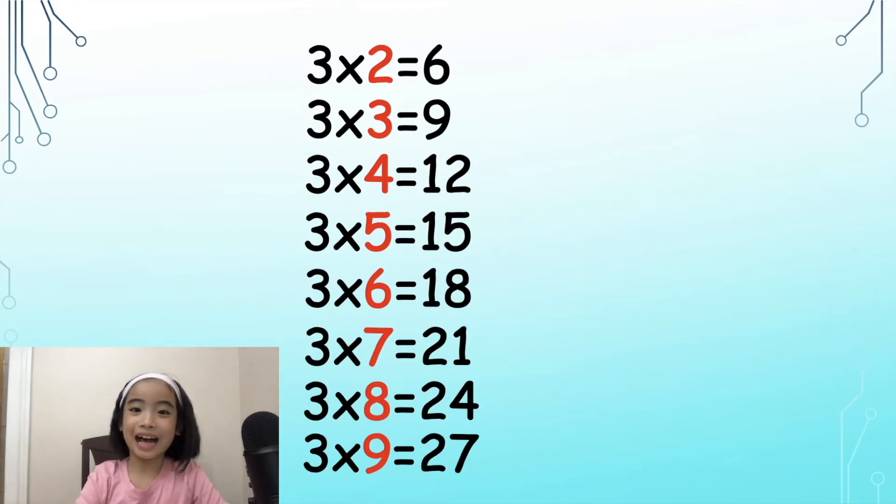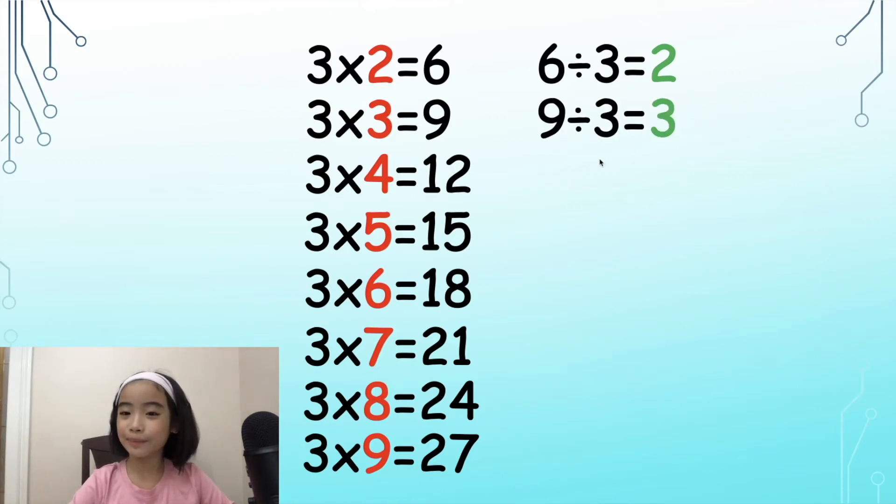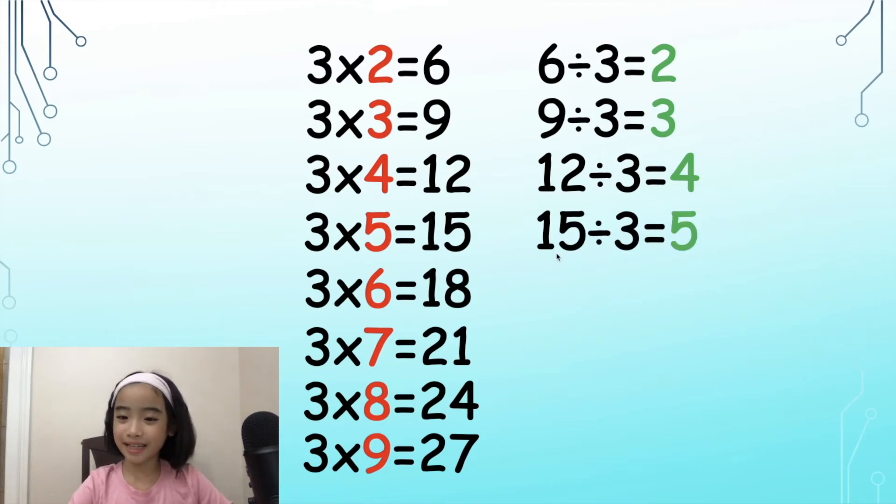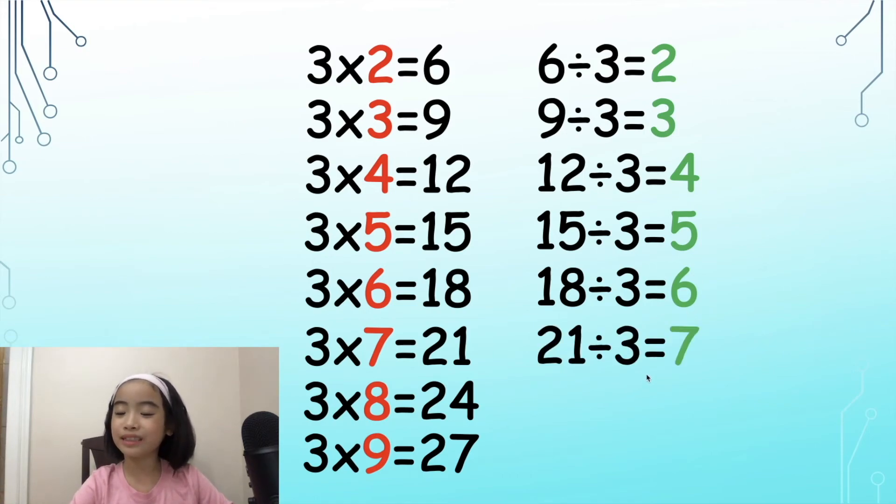Here is the 3 times table. Let's say the division of 3 altogether. 6 divided by 3 equals 2. 9 divided by 3 equals 3. 12 divided by 3 equals 4. 15 divided by 3 equals 5. 18 divided by 3 equals 6. 21 divided by 3 equals 7. 24 divided by 3 equals 8.